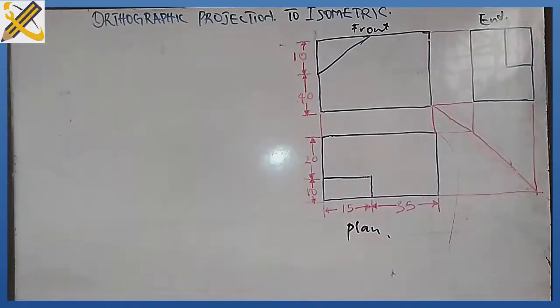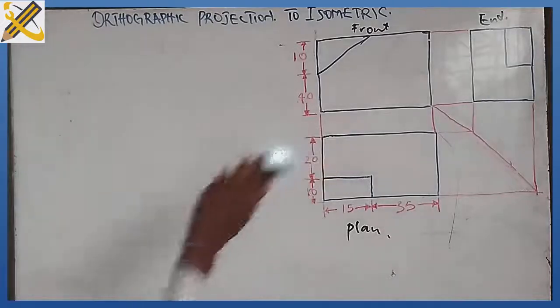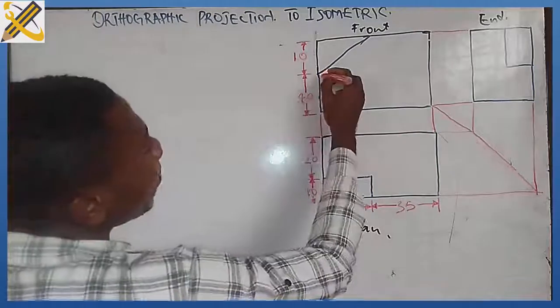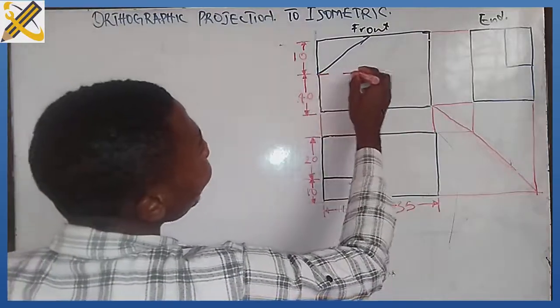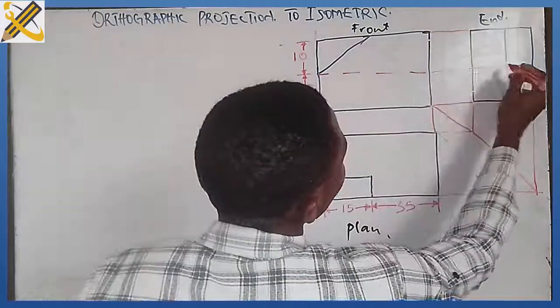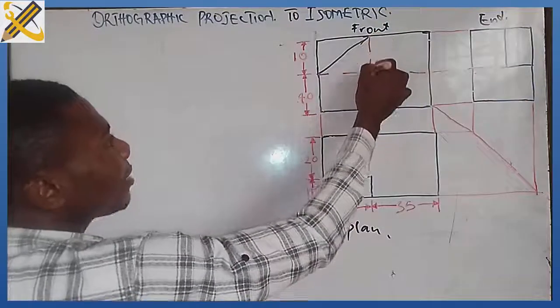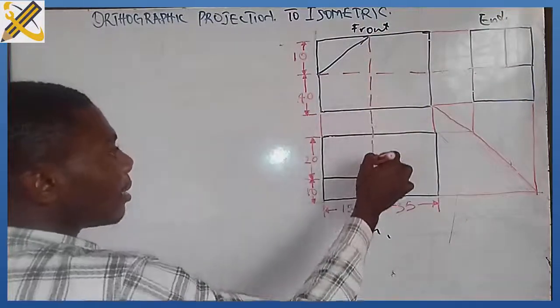If you have to combine these views together to give us an isometric view, that is a 3D view, how do we go about it? Take note of this: first of all, this particular plane, this junction here aligns with this area here, while this junction here also aligns with this area here.